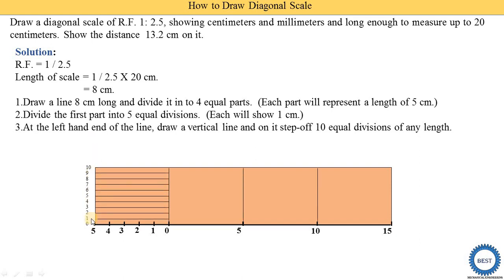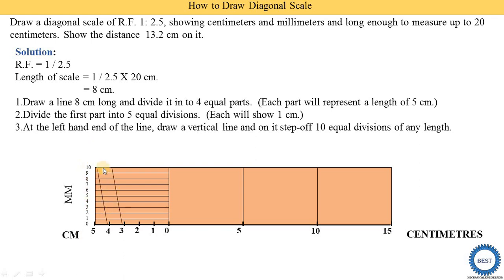We give the numbers 0, 1, 2, 3, 4, 5, 6, 7, 8, 9, and 10 on the vertical scale. Then we join these 10 divisions on the vertical scale with the four divisions of the horizontal scale. We label the units — centimeters on the horizontal axis and millimeters on the vertical. Using a ruler or set-square, we draw parallel lines from all the horizontal divisions.